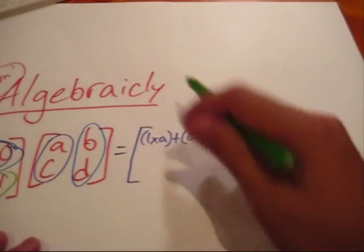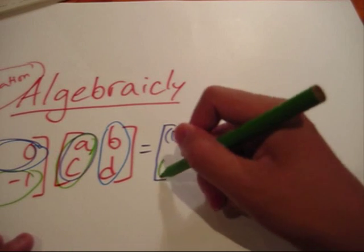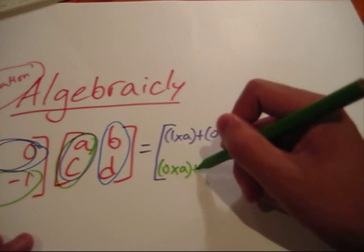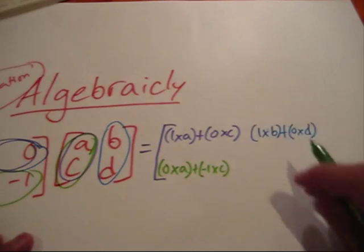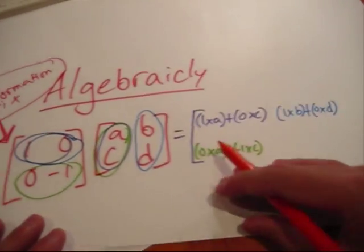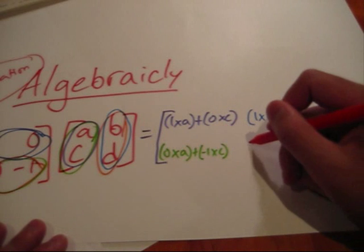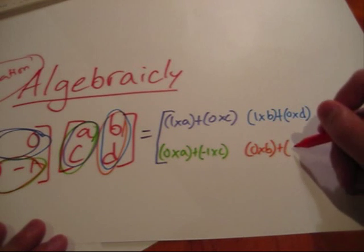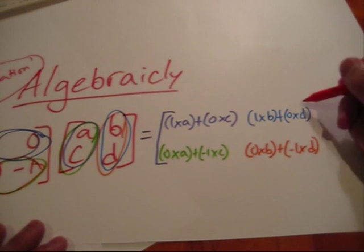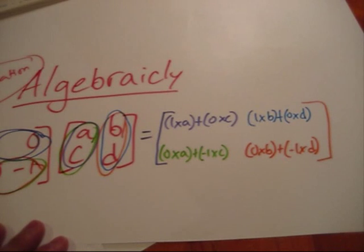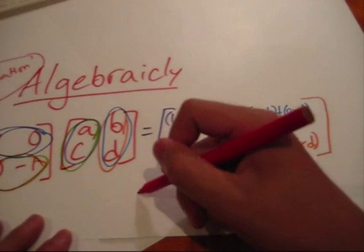Next, the 0 times A plus the minus 1 times C. Then again, the 0 times B and the minus 1 times D. As you can see, we solve this out as if any other matrix multiplication.